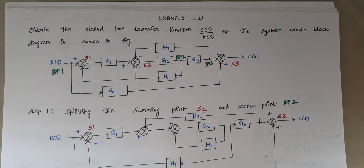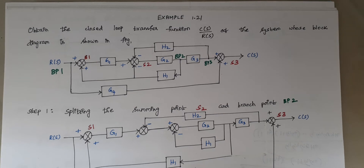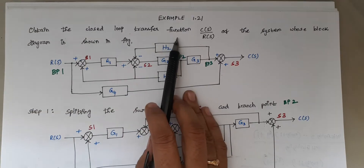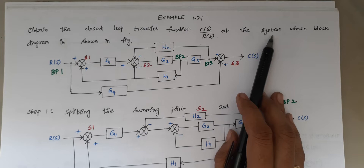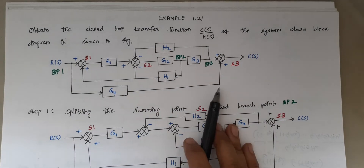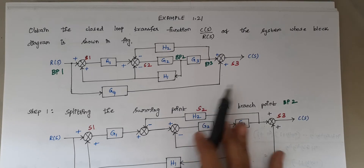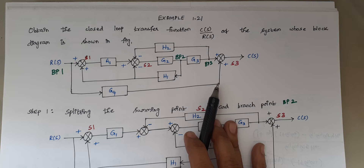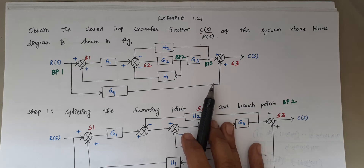Hello viewers, I am Kausalya. Today we are going to solve another block diagram problem. The problem is: obtain the closed loop transfer function C(S)/R(S) of the system whose block diagram is shown in the figure. To solve any block diagram problems, you should be familiar with the block diagram reduction rules. I am going to give the link in the description so you can review those rules before solving this problem.